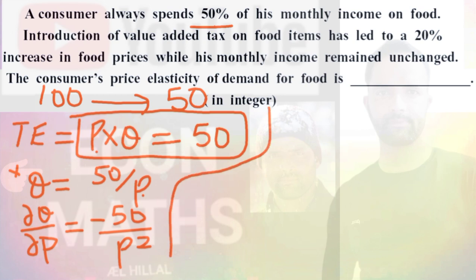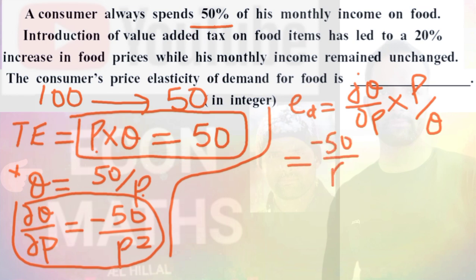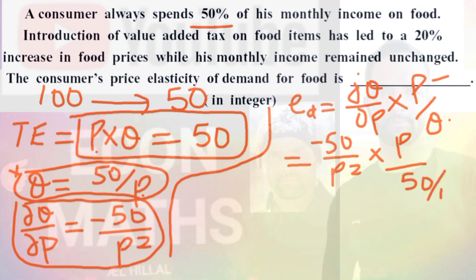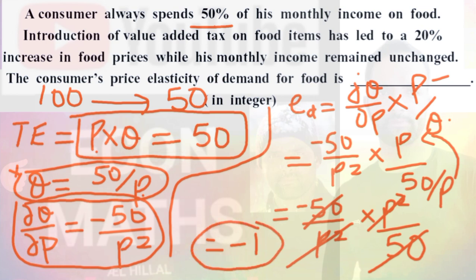The elasticity of demand formula is given by (dQ/dP) × (P/Q). Using this formula: in place of dQ/dP we substitute −50/P², multiplied by P, and in place of Q we write 50/P. This gives us −50/P² × P × P/50. Simplifying: 50 and 50 cancel, P² and P² cancel, leaving us with minus 1. So the price elasticity of demand for food equals −1.